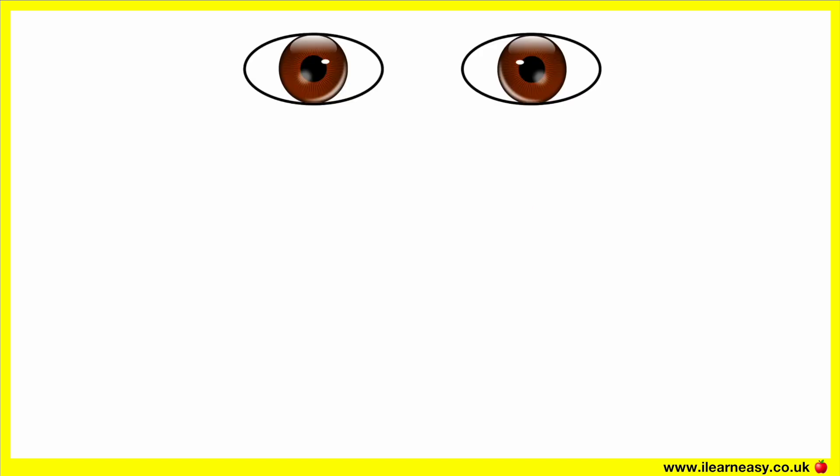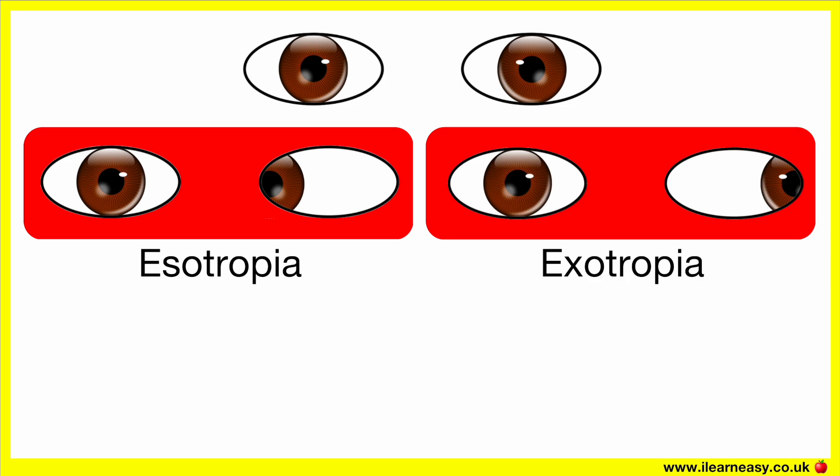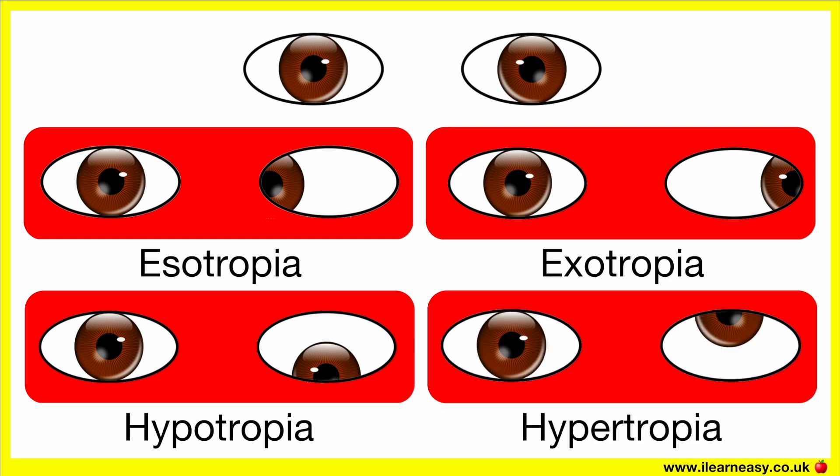Tropia refers to a misalignment of the eyes, where one eye deviates from its normal position when both eyes are open. There are different types of tropias depending on the type of misalignment. These include esotropia, exotropia, and hypertropia.